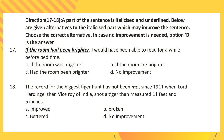Directions for questions 17 and 18: A part of the sentence is italicized and underlined. Below are given alternatives to the italicized part which may improve the sentence. Choose the correct alternative; in case no improvement is needed, choose accordingly. Question 17: If the room had been brighter, I would have been able to read for a while before bedtime. Question 18: The record of the biggest tiger hunt has not been met since 1911, when Lord Hardinge, then Viceroy of India, shot a tiger that measured 11 feet and 6 inches.